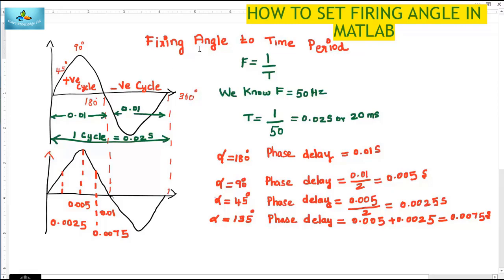Now, firing angle or phase delay. The firing angle is normally varied from 0 to 180 degrees. The minimum value of firing angle is 0 and the maximum value of firing angle is 180 degrees for an SCR.